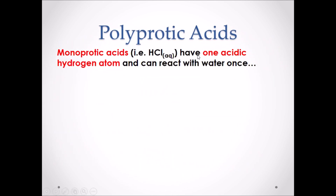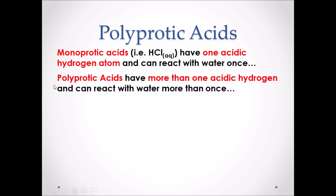Polyprotic acids: monoprotic acids have one acidic hydrogen atom and can only react once with water. For example, HCl — there is only one hydrogen in the chemical formula, therefore it can only react once. Polyprotic acids have more than one acidic hydrogen and can react more than once with water.